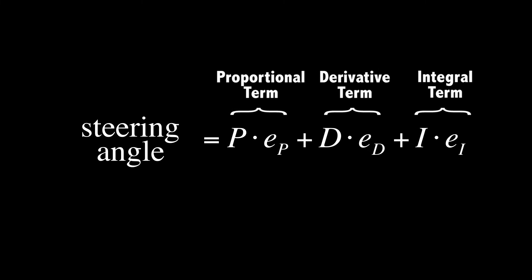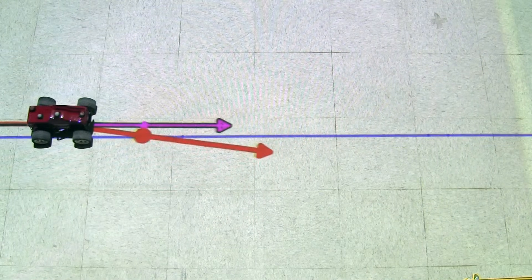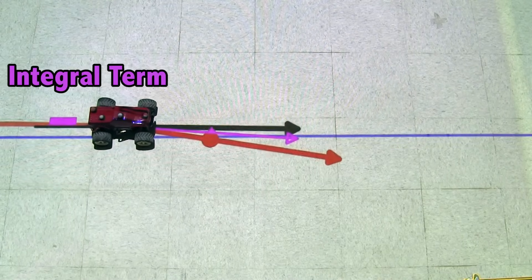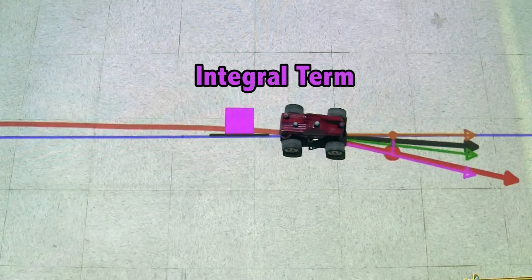This third measurement sums up the cross-track error to give an indication if we are spending more time on one side of the trajectory or the other. You can see that if we sum up the cross-track errors, we obviously spend more time on one side of the trajectory. The integral term we propose is then exactly this sum multiplied by a gain.